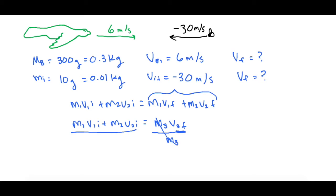So divide by the mass of the bird plus the insect or we'll call it mass 3 in this case. So now let's go ahead and plug it in.